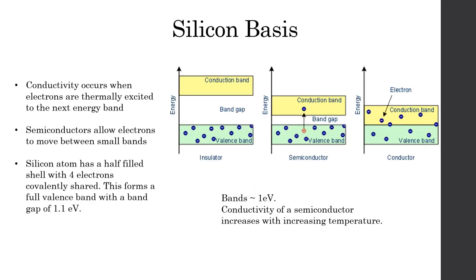Conductivity occurs when electrons are excited to the next band. Semiconductors allow electrons to move between smaller bands. Particularly in solar cells, silicon atoms are used which have a half-filled shell with four covalently shared electrons. This forms a full valence band with a small band gap of 1.1 electron volts.